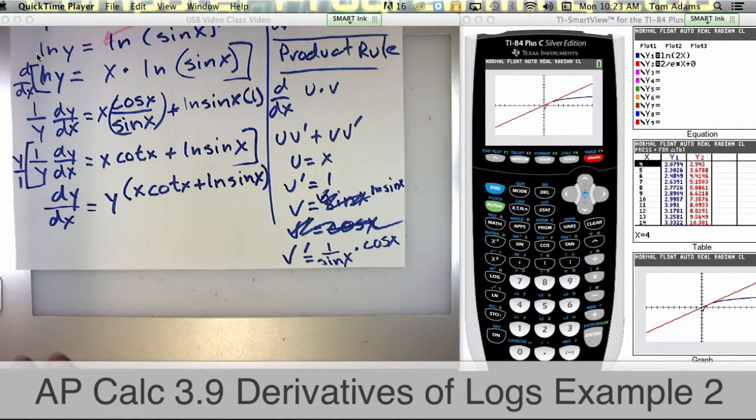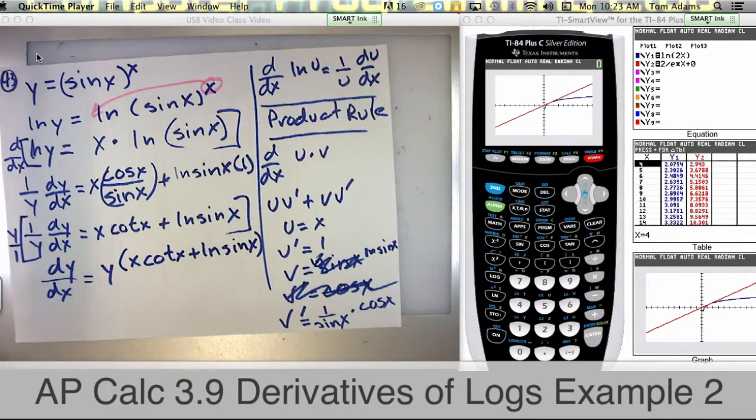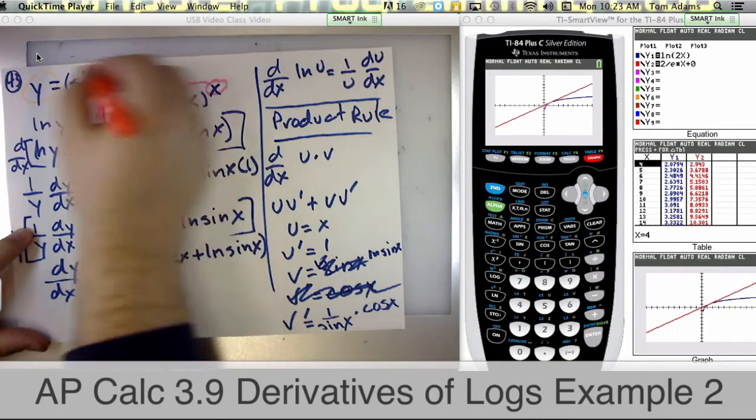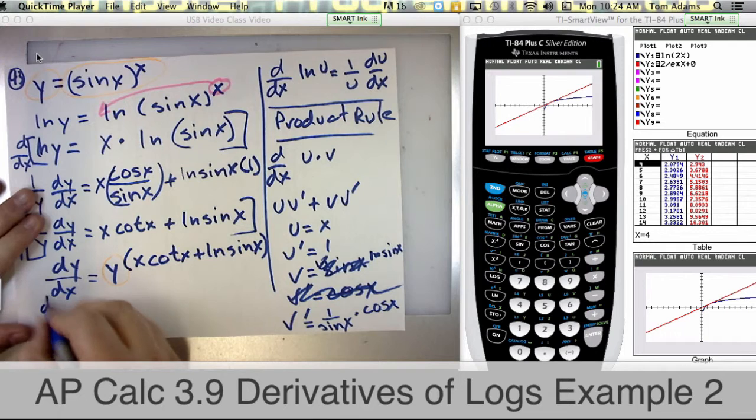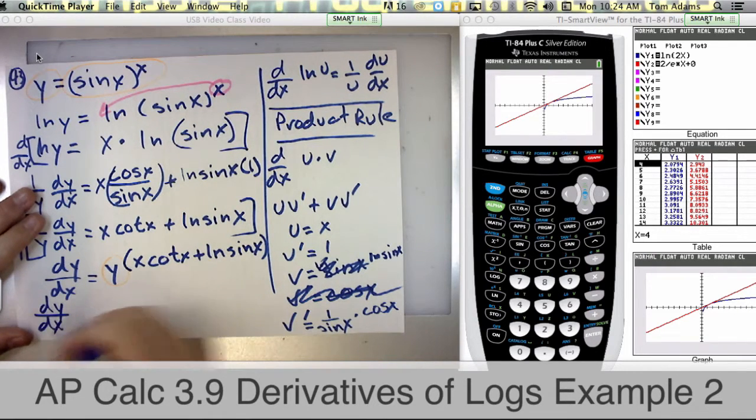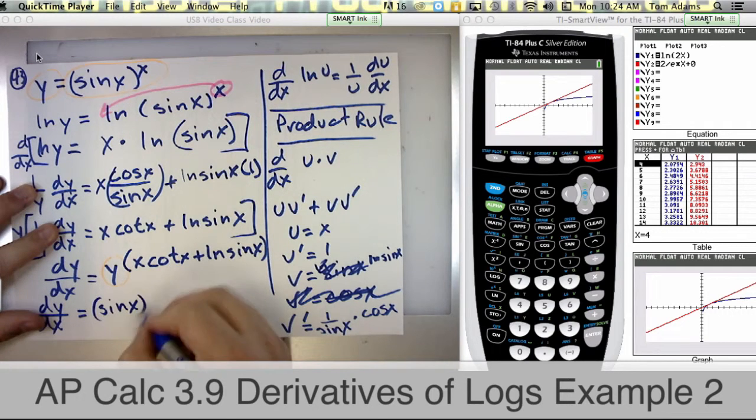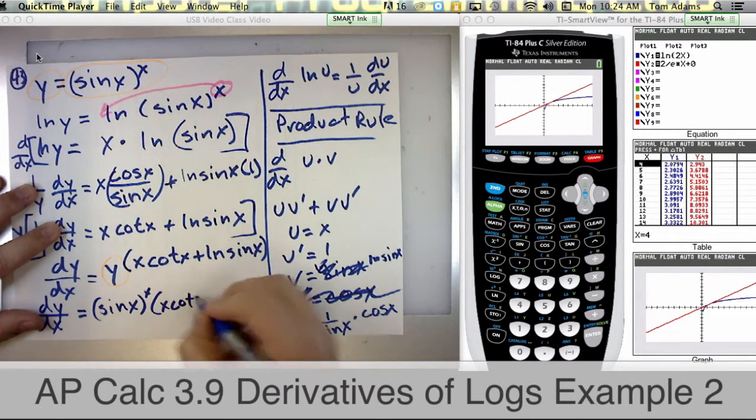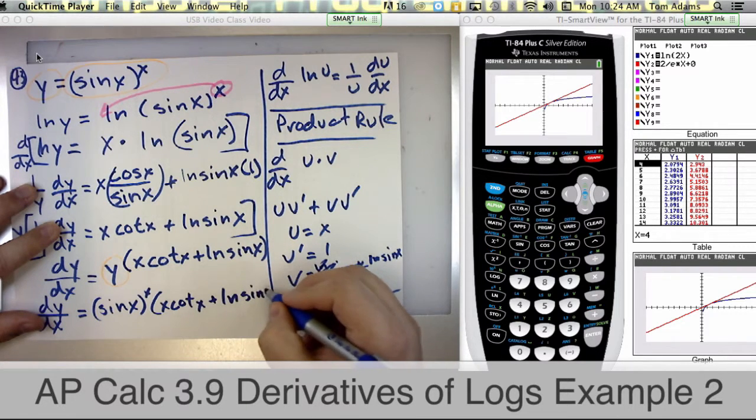Now I could clean this up a little bit if I plug in y. What did I say y was? Well we said that y is equal to sine of x raised to the x. So dy dx is actually sine of x raised to the x times x cotangent x plus the natural log of sine of x.